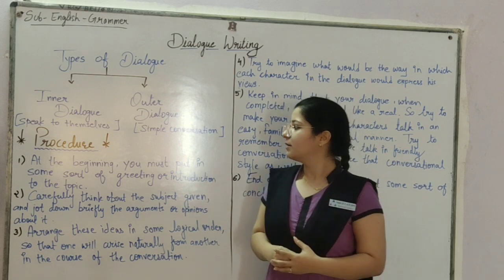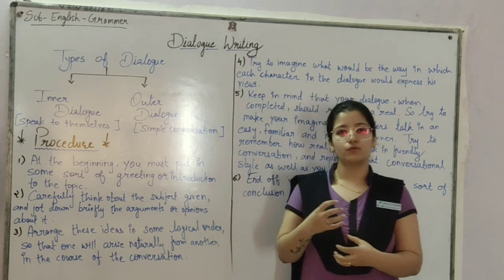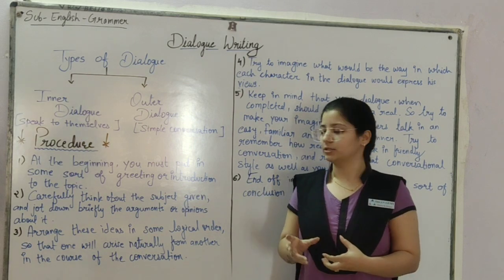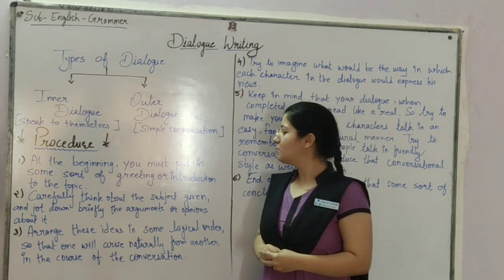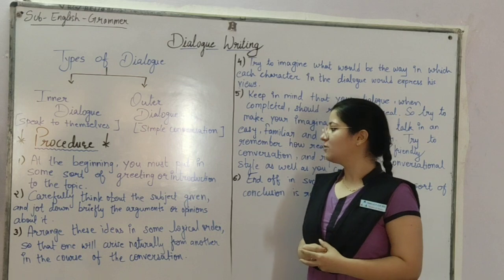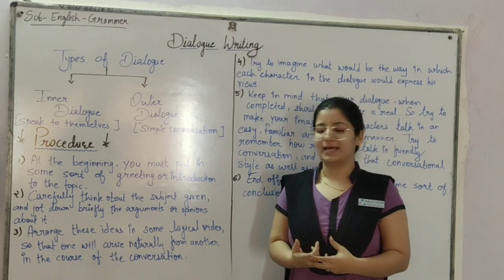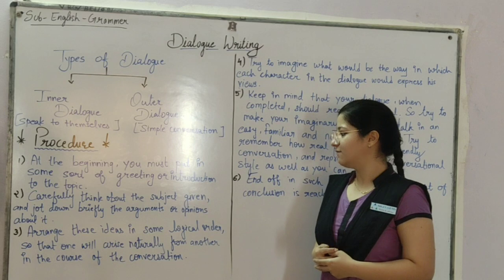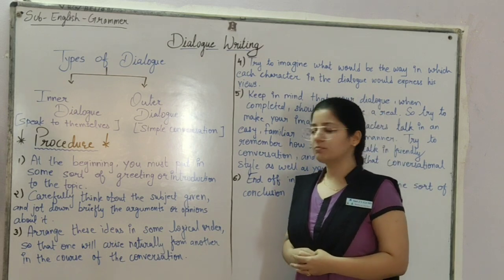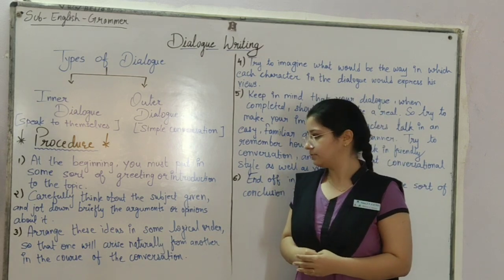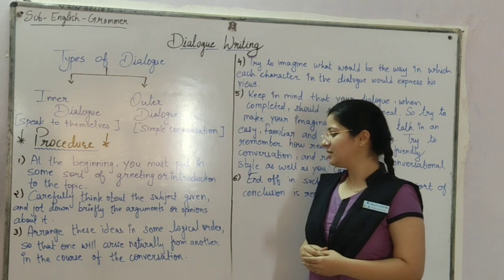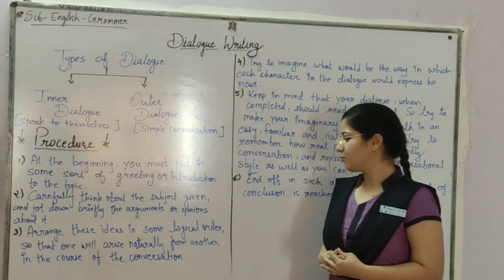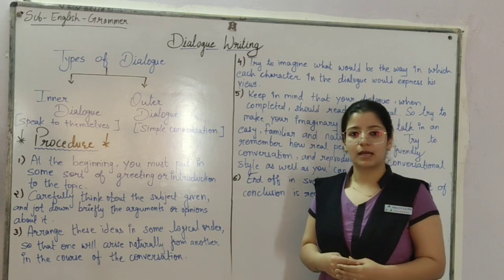Now there is a procedure. First, I will tell you how you can write dialogues and how you can end the conversation. First point: in the beginning you must put in some sort of reading or introduction to the topic. Next, carefully think about the subject given and jot down briefly the argument or opinion about it. Number three: arrange these ideas in some logical order so that one will arise naturally from another in the course of conversation.